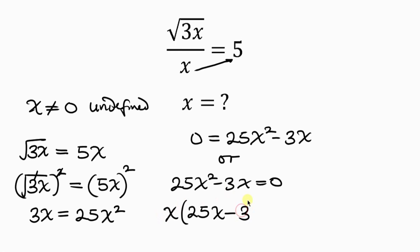And this is equal to 0, so we have 2 cases from here: we have x to be equal to 0, or we have 25x minus 3 to be equal to 0. Now, like we said before, x cannot be 0, so we're going to be rejecting this.